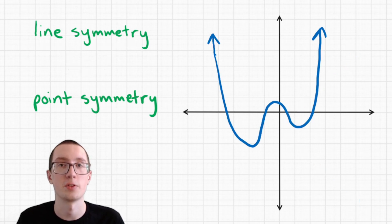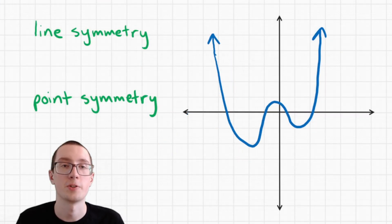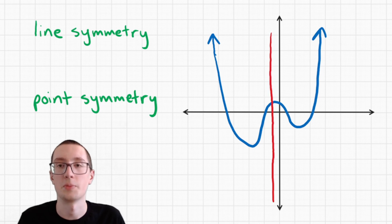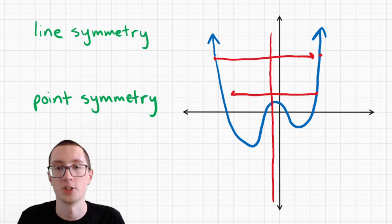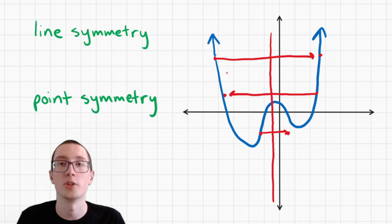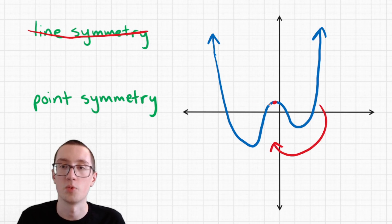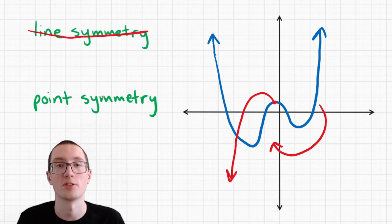Here's another example — go ahead and pause and see if you can figure this one out. We need to determine if this has line symmetry. The most probable place to draw a line seems to be right here. This looks like a mirror image here, and here too, but look down here — this part actually extends farther than the other part, so this is not a mirror image all the way. So no, this does not have line symmetry. Let's test for point symmetry: we put a point here and rotate this part 180 degrees — it does not correspond to this part of the graph at all. So this does not have either kind of symmetry.